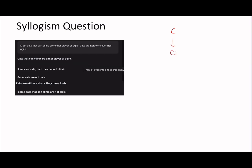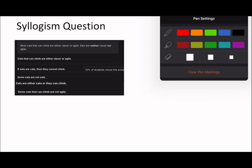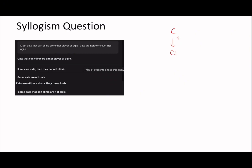So the first question says: most cats that can climb — I'm going to put a question mark here because we don't know how many cats can climb — but out of the ones that can climb, most of them are clever or agile. It says zats are neither clever nor agile. So we can create a hypothetical that says cats that can climb are neither clever nor agile.